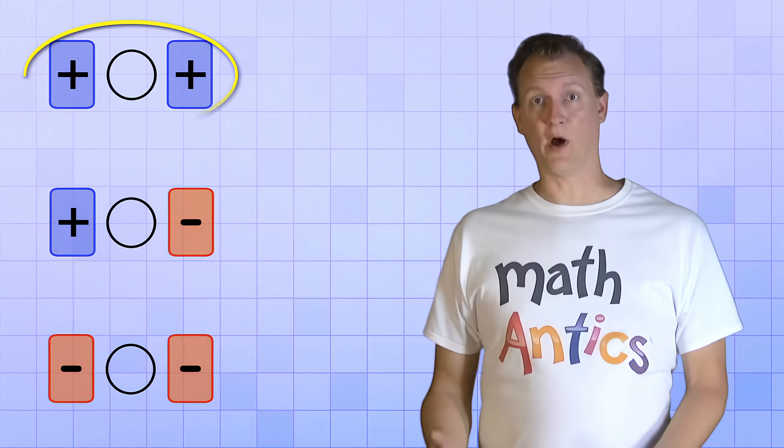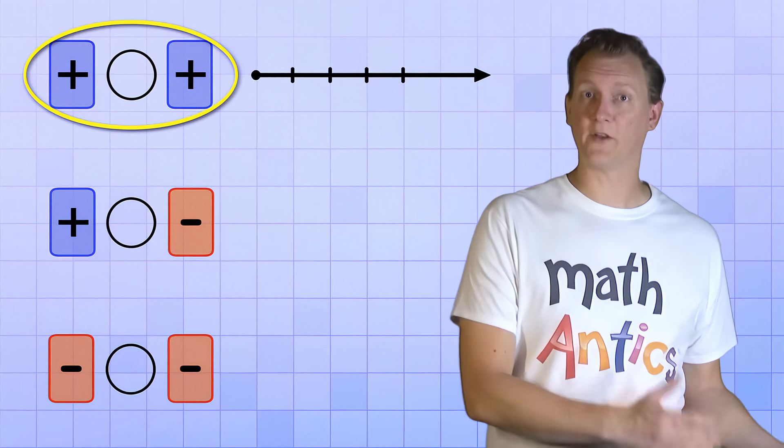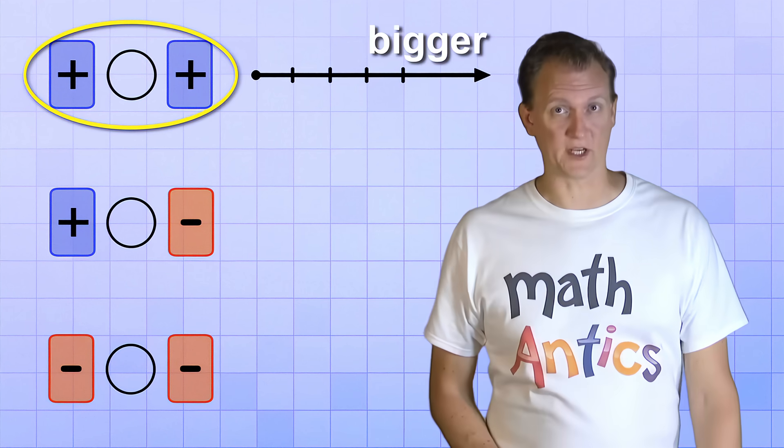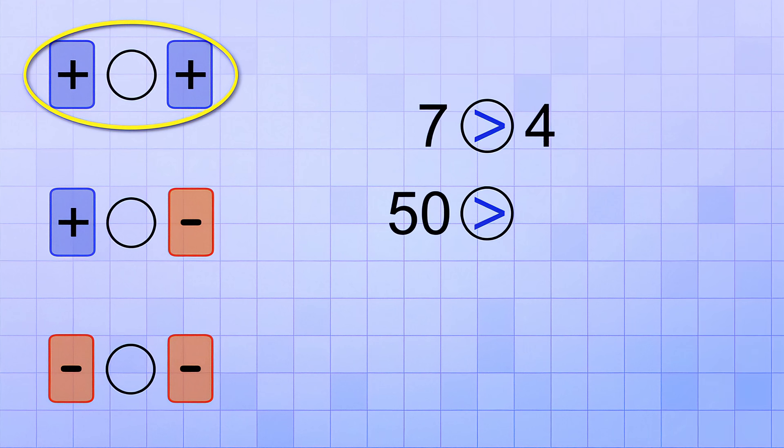And you already know how to compare two positive integers. The further right on the number line you go, the bigger the numbers get. 7 is greater than 4, 50 is greater than 20, and 1000 is greater than 100.